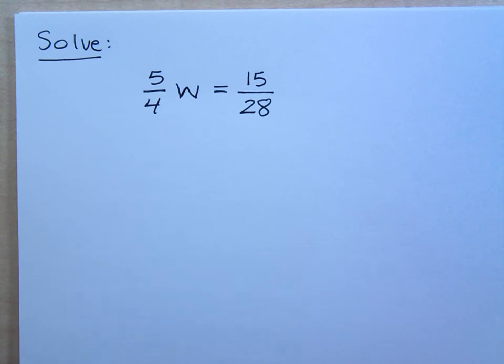All right, let's look at this problem. Solve 5 fourths w equals 15 28ths. Now, the 5 over 4 is what we're trying to get rid of because we want to get the variable, which is w, by itself.